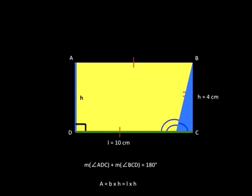Now we have rectangle ABCD with a height of 4 centimeters, a length of 10 centimeters, and an area of 40 centimeters squared. When we use the area formula for a parallelogram, we are actually calculating the area as if the parallelogram was a rectangle.